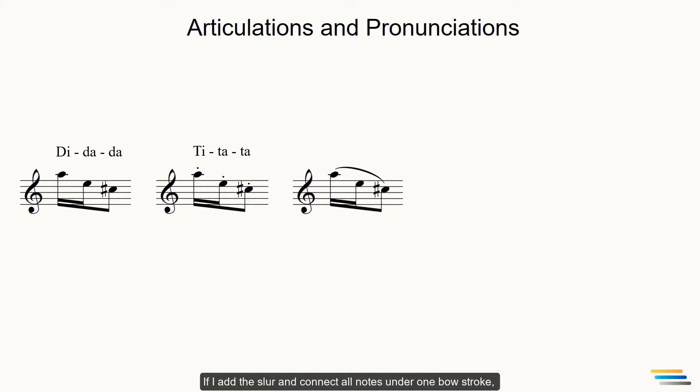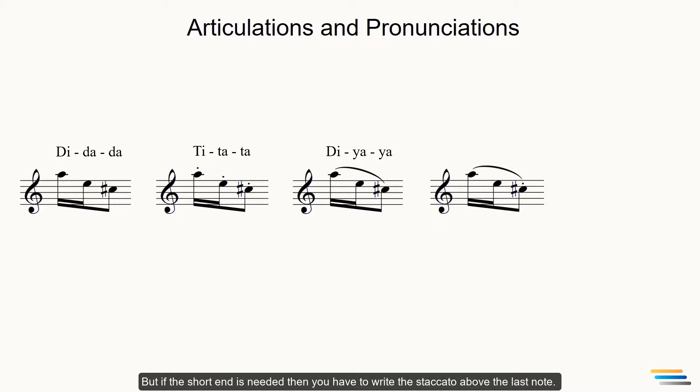If I add the slur and connect all notes under one bow stroke, the pronunciation will be legato. But if the short end is needed, then you have to write the staccato above the last note.